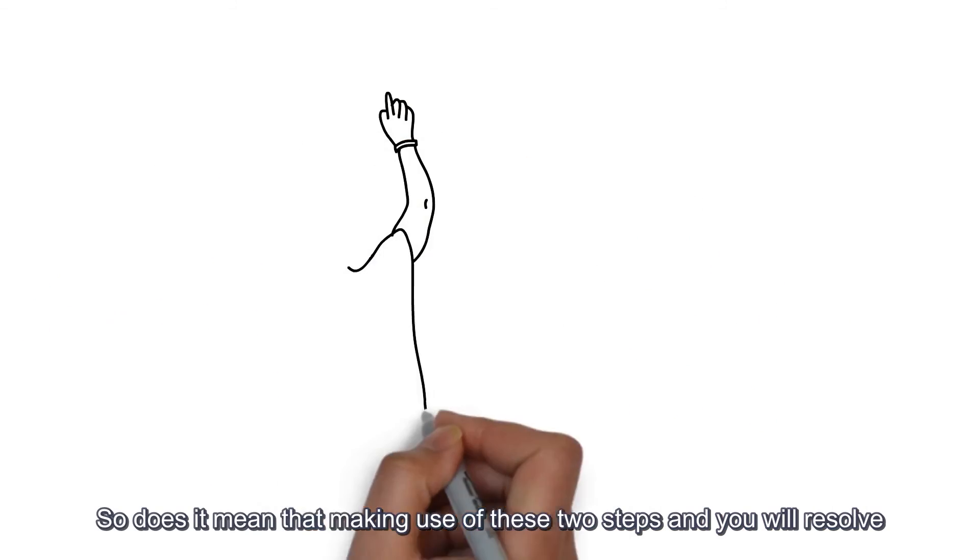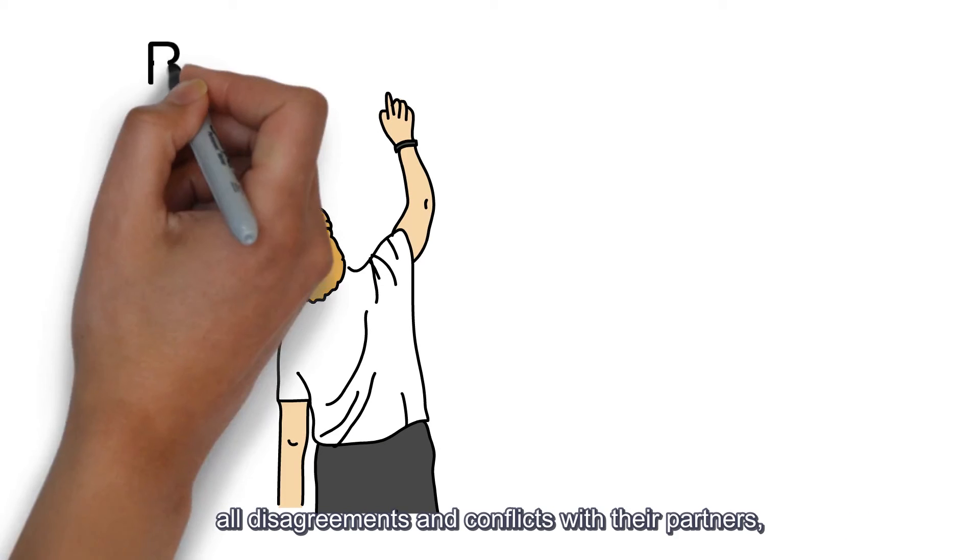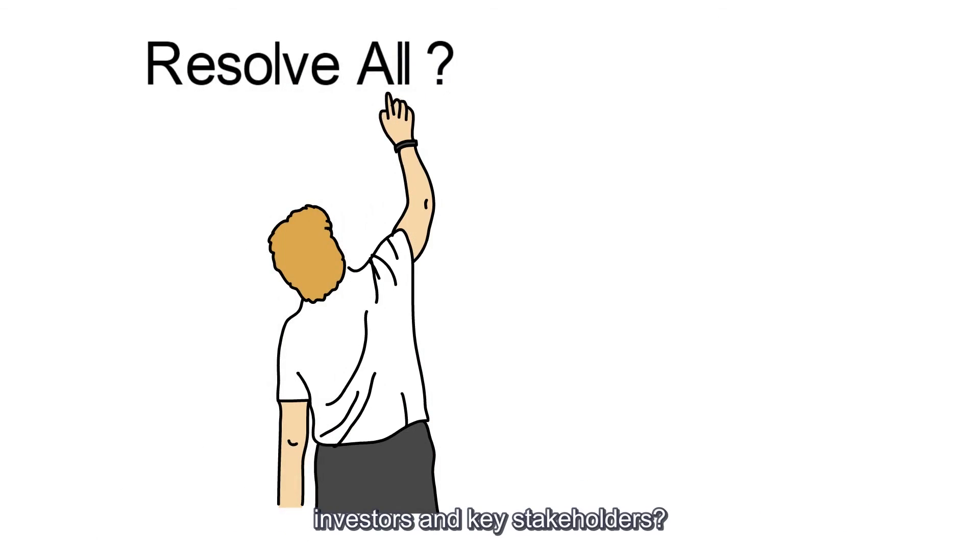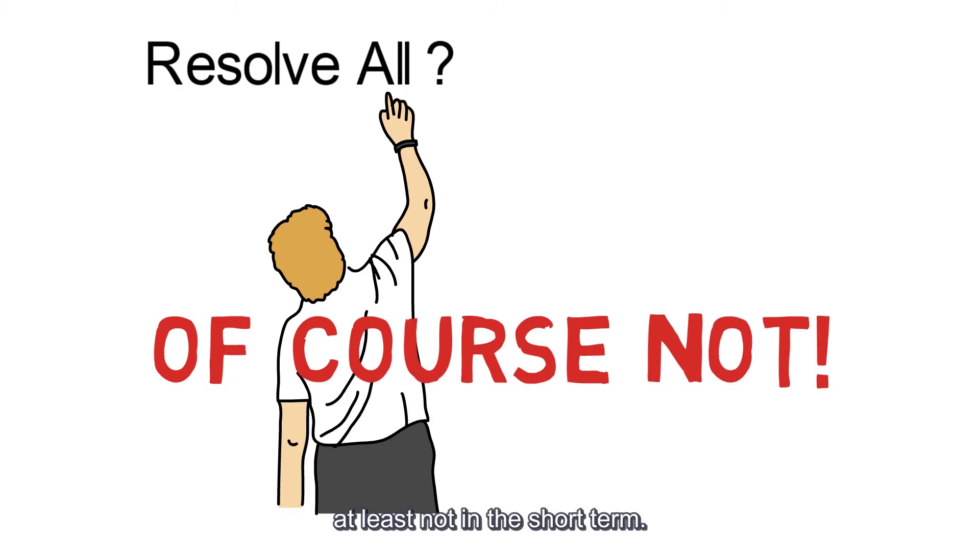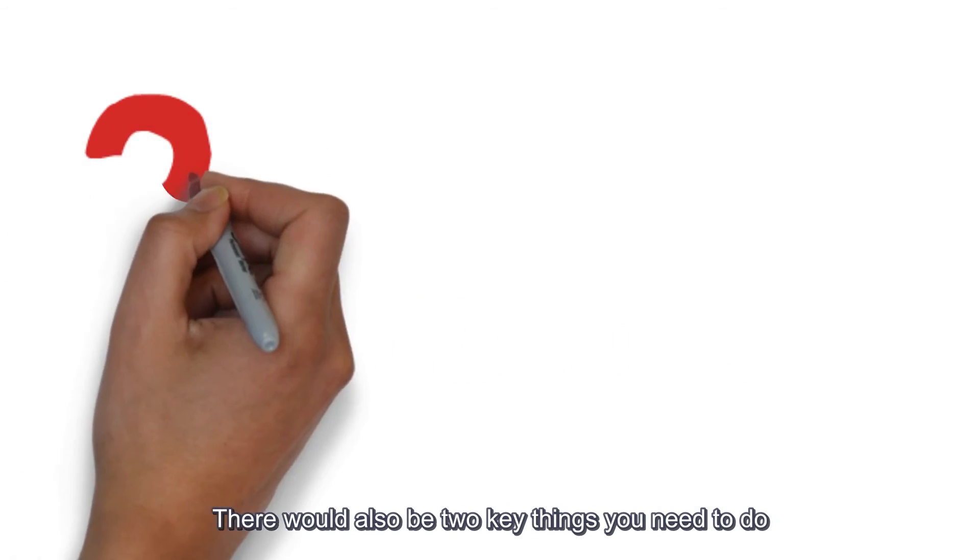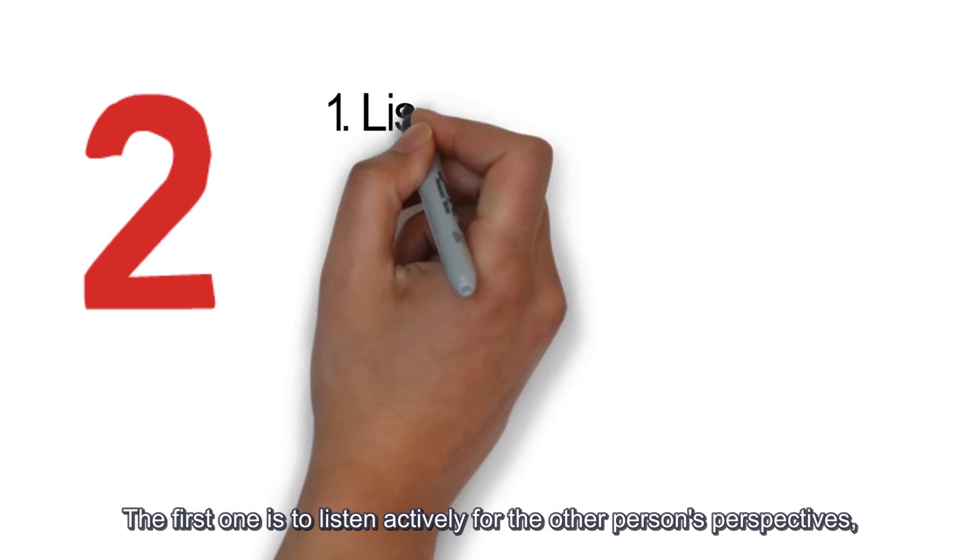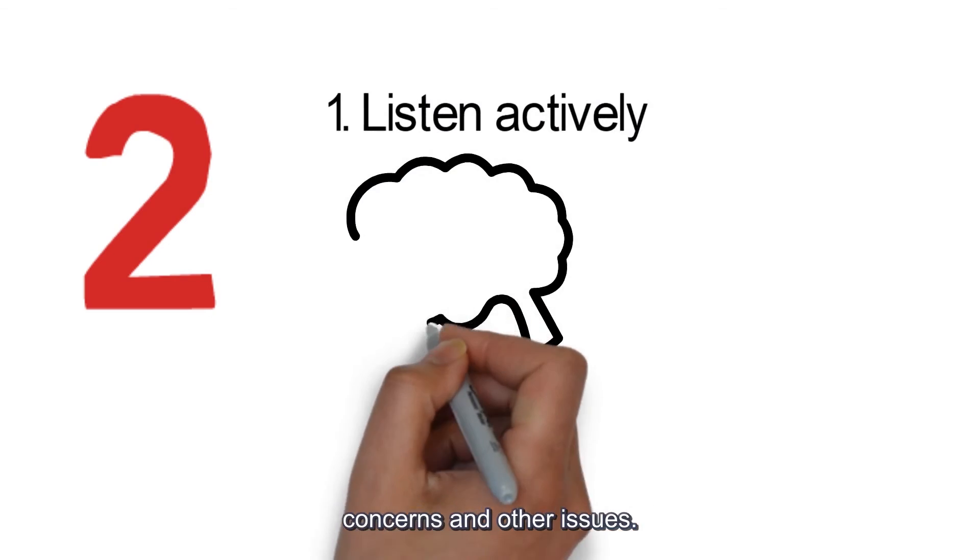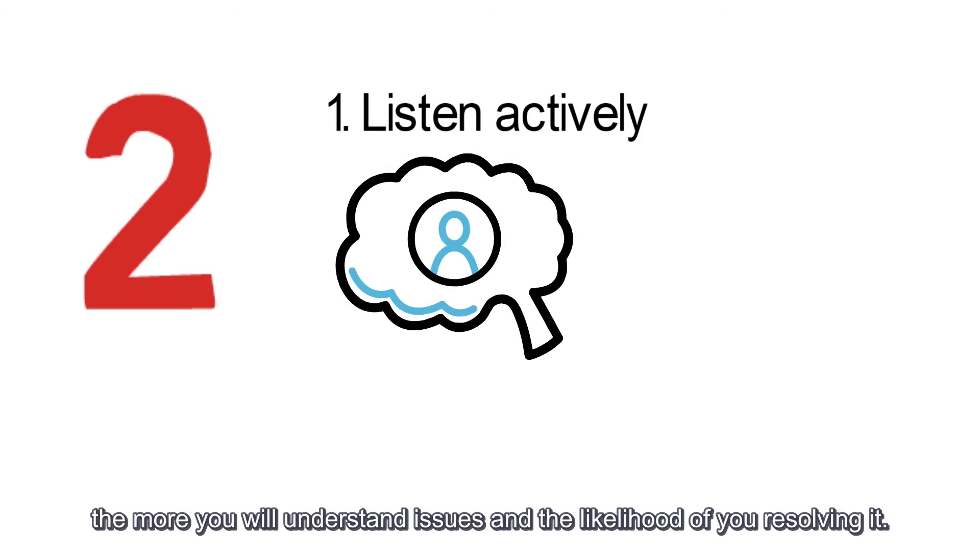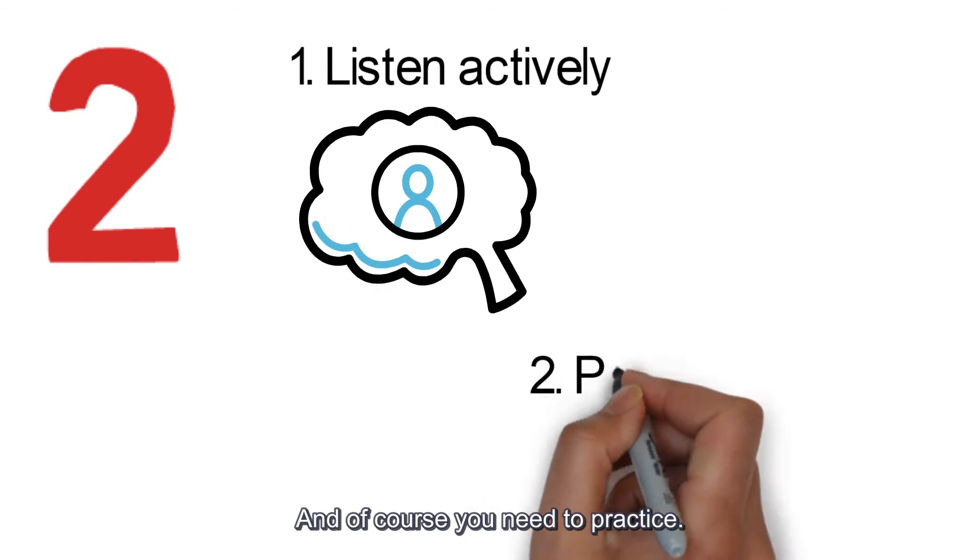So does it mean that making use of these two steps will resolve all disagreements and conflicts with your partners, investors and key stakeholders? Of course not. There will be some situations where the disagreements could not be resolved, at least not in the short term. There are two key things you need to do to improve your success in resolving such issues. The first one is to listen actively for the other person's perspectives, concerns and other issues. The more you understand the other person, the more you will understand issues and the likelihood of you resolving it. And of course you need to practice.